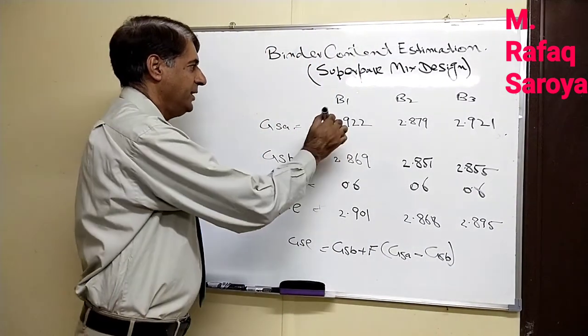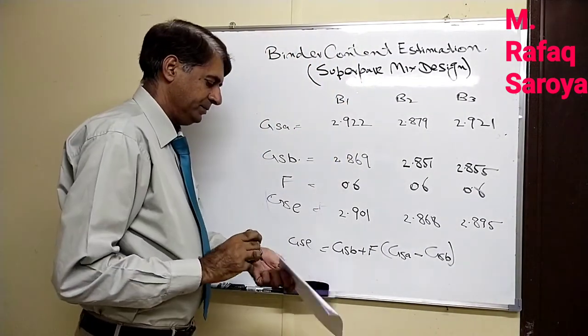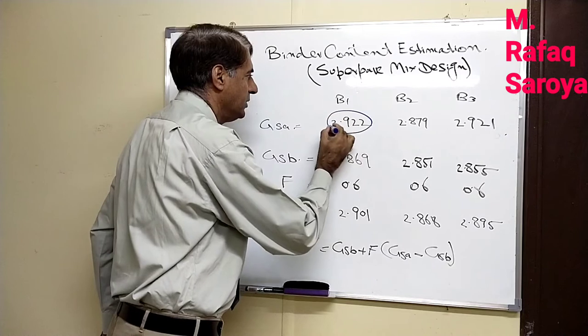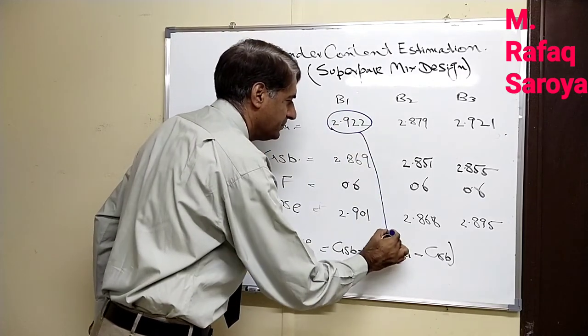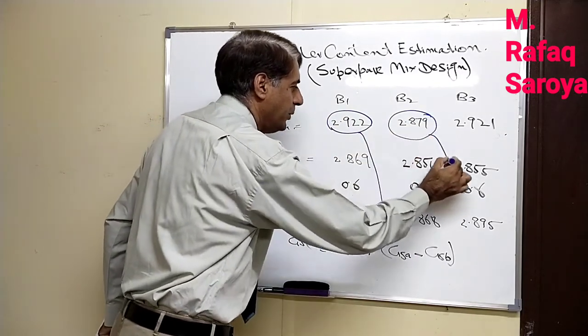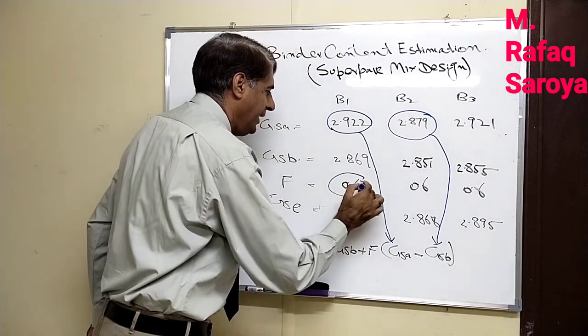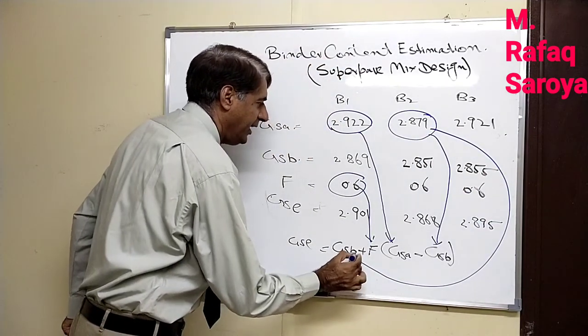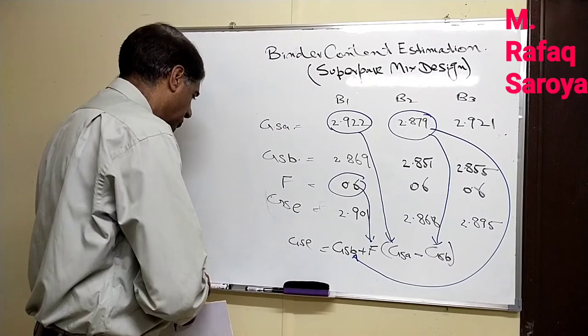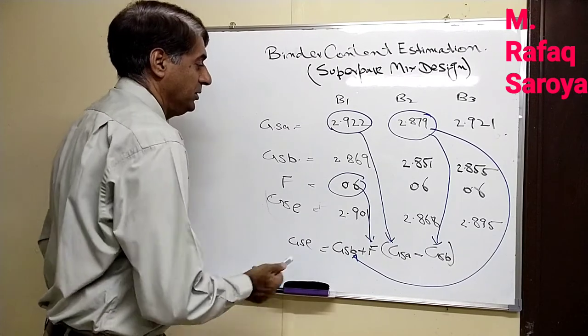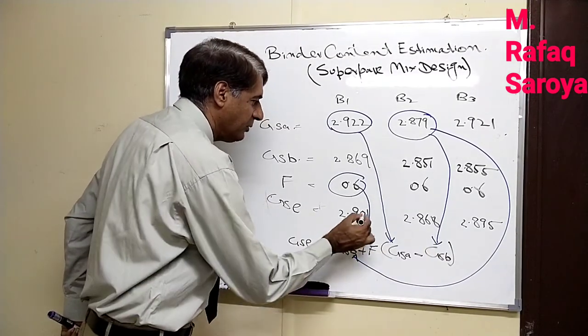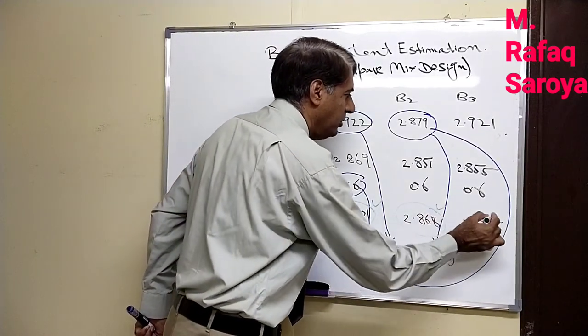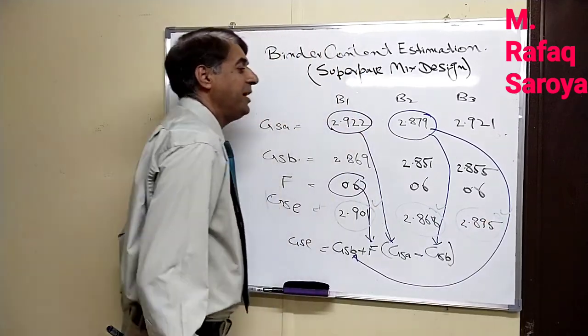Please keep this in mind. Let me repeat it again. This value is put at this point, and this value is put at this point. And now this F is coming over here, and again this value is coming over here. And after the computation, we are going to get these values. This is very important.